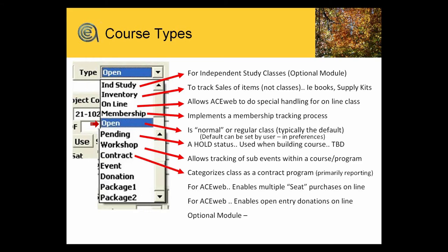Contract classes — a way to categorize a class as a contract program, primarily in reporting. There's not a lot of special handling with that. Event class — primarily related to Ace Web — if you've got an event like an evening with a professor and you don't care about names and just want tickets to get in the door, it allows you to do that online with Ace Web where a student can enroll and say 'I want five tickets for me and my four friends.' Donation — primarily for Ace Web, enables open entry donations. And packaging is an optional module we're going to talk about in a second.